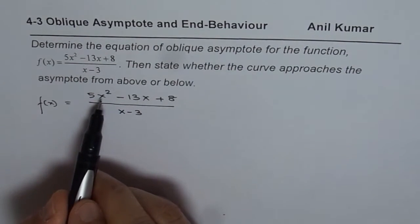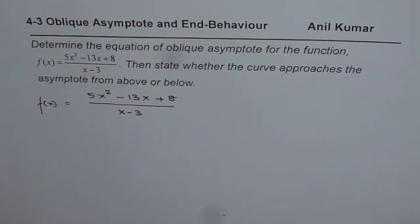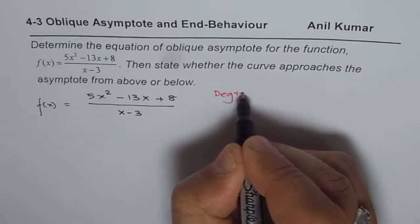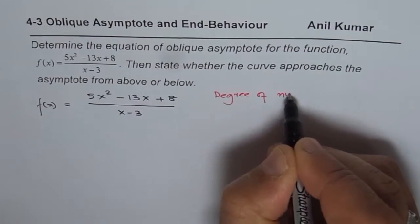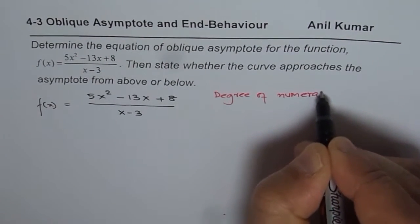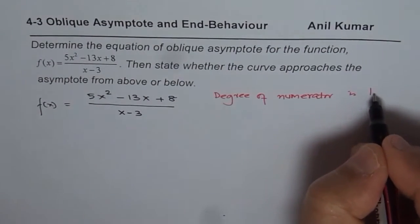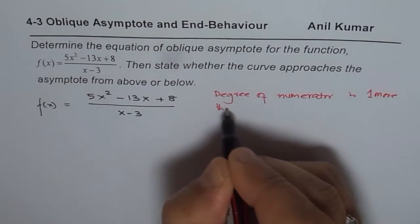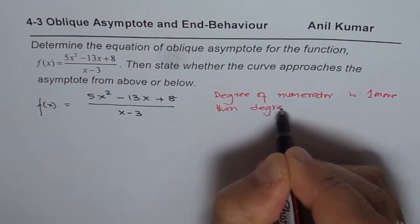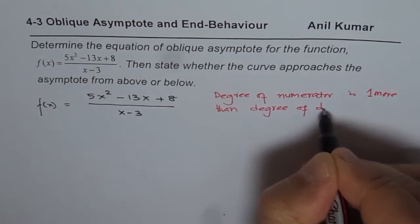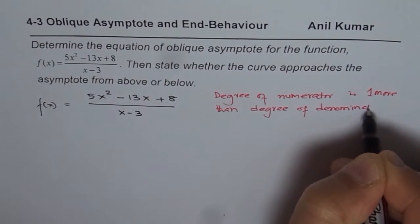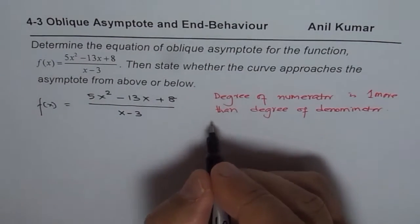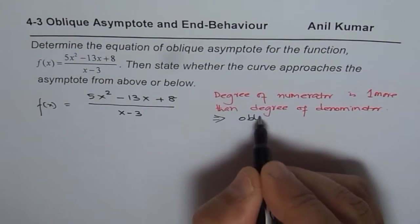Since the degree of the numerator is 1 higher than the degree of the denominator, we expect an oblique asymptote. The condition for an oblique asymptote is that the degree of the numerator is exactly 1 more than the degree of the denominator.